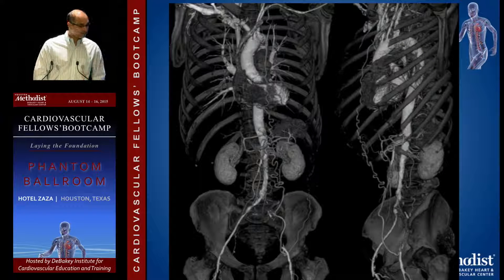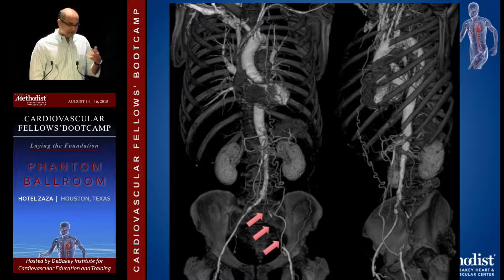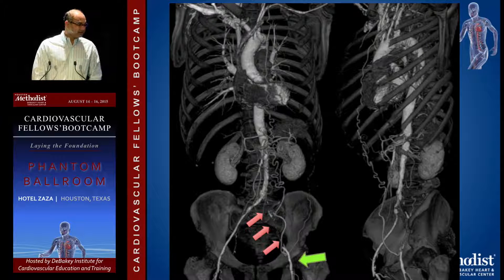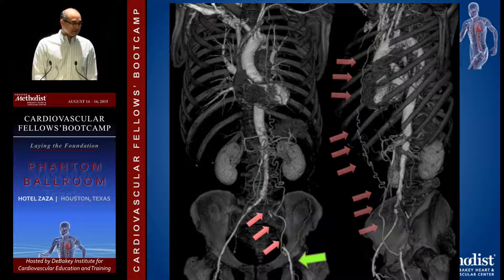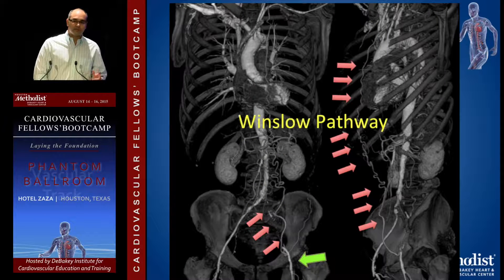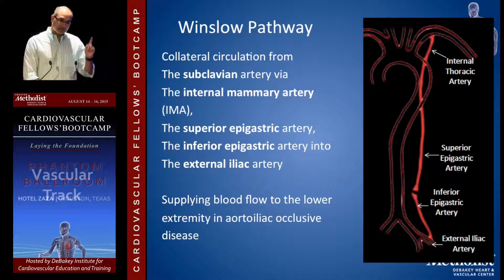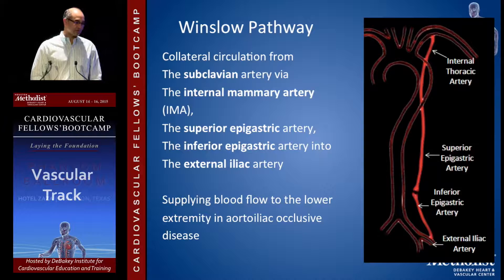Looking at this picture — the aorta bifurcates, you see the right common iliac, but you don't see the left common iliac. Yet you see the external iliac lighting up. On closer look with angle adjustment and a 3D reconstruction, you see this little squiggly vessel — the Winslow pathway of collateralization to the leg. People with aortoiliac disease and common iliac occlusion have a collateral pathway from subclavian to internal mammary, to superior epigastric, to inferior epigastric, and into the external iliac. That's what feeds their legs. Once they have a CABG with a mammary graft to the LAD, their leg goes cold — and that's when we get called.